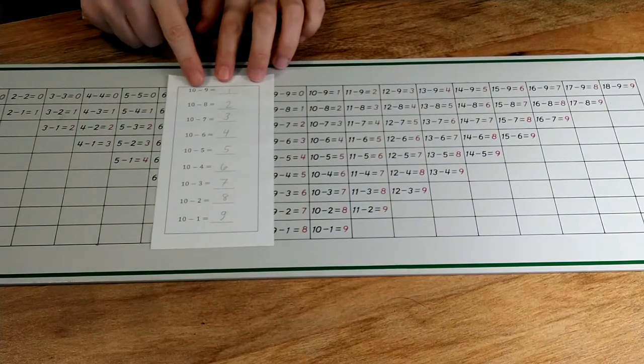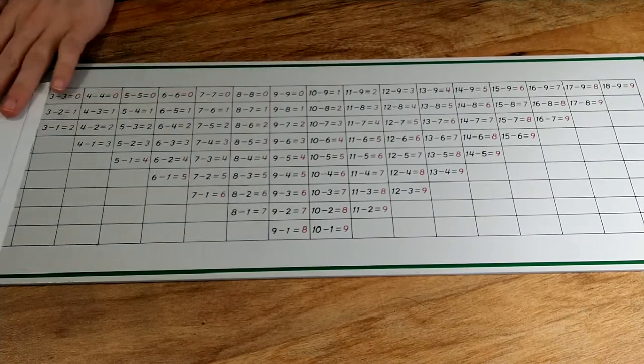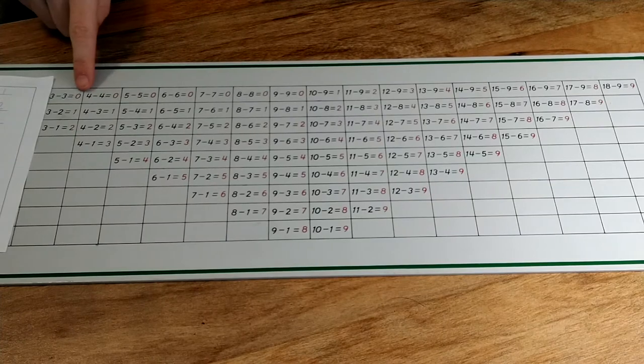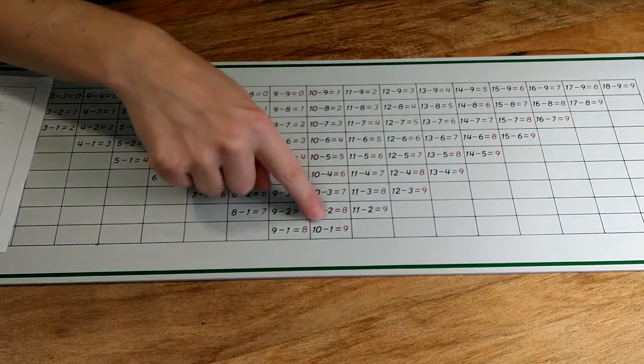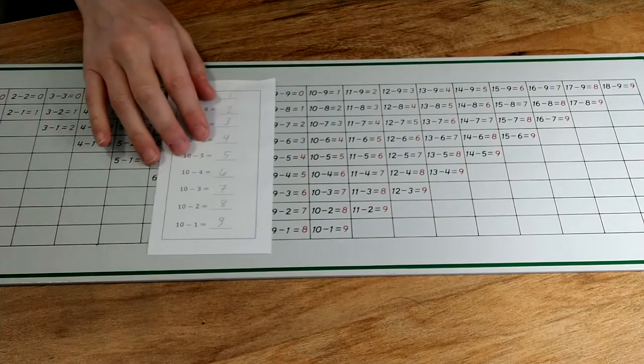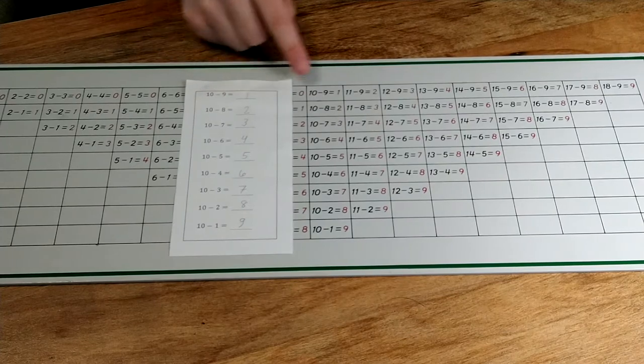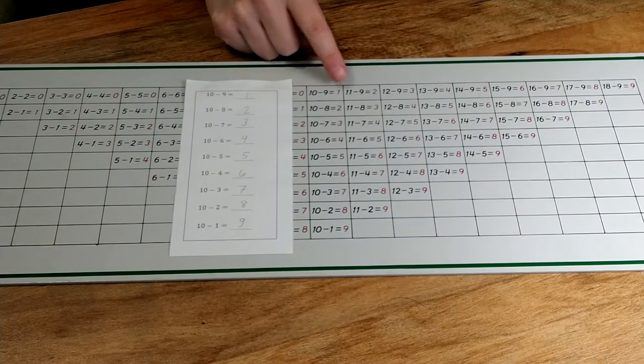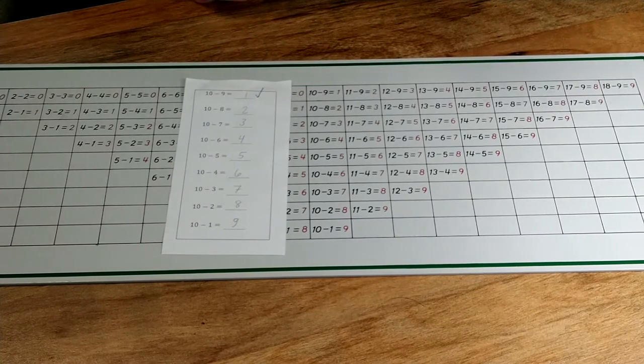Ten minus nine equals one. Ten. Here are the facts with ten. Ten minus nine equals one. Ten minus nine equals one. Okay, that one's correct.